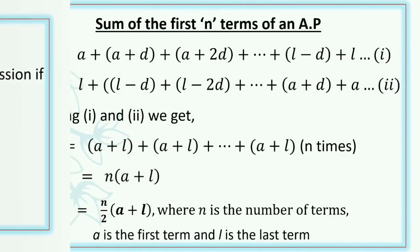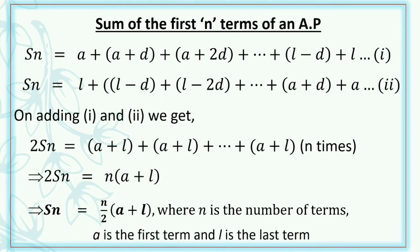Now, moving on to today's topic, we have the sum of first n terms of an AP, denoted by Sn. Here we have a simple procedure to derive the formula. First of all, we write Sn = a + (a+d) + (a+2d) + ... + (l−d) + l. Here, a is the first term, a+d is the second term, a+2d is the third term, etc. And l−d is the second last term; if you want the third last term, it will be l−2d, and the last term is l. So we take this as equation number 1.